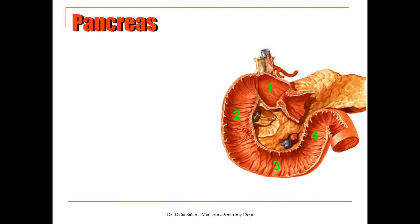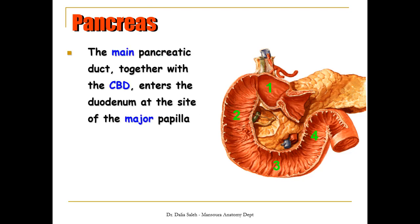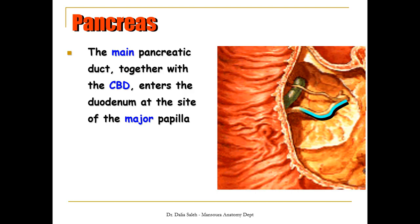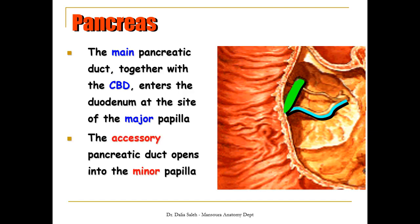Revising the anatomy here — this C-shaped structure is the duodenum with its first, second, third, and fourth parts. In the middle of the second part of the duodenum, the main pancreatic duct together with the common bile duct enter the duodenum at the site of the major duodenal papillae. This is the main pancreatic duct and this is the common bile duct — they both open into the major duodenal papillae. Just above it lies the minor duodenal papillae where the accessory pancreatic duct opens into the duodenum.